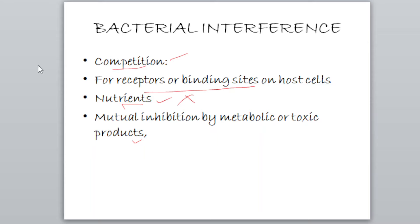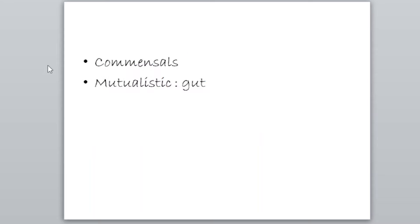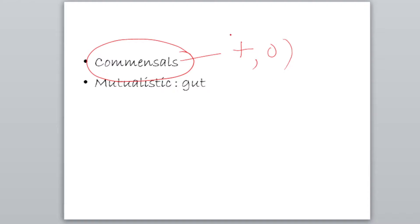This bacterial interference is important for your examination. The normal microbiota interferes with the colonization of your pathogen — that is as simple as that. The microorganisms that are present constantly on your body are known as commensals. In commensalism, one organism is benefited whereas the other is not affected — it will not have any effect either positive or negative.